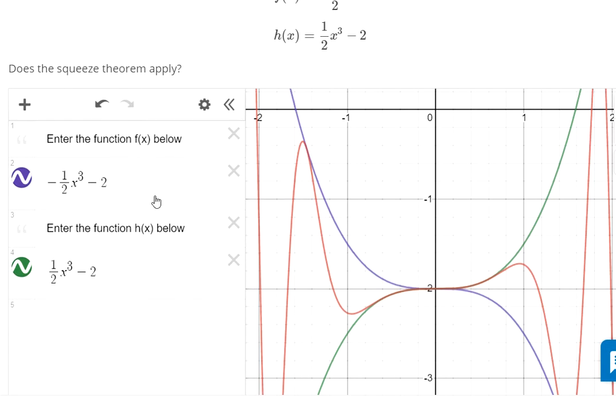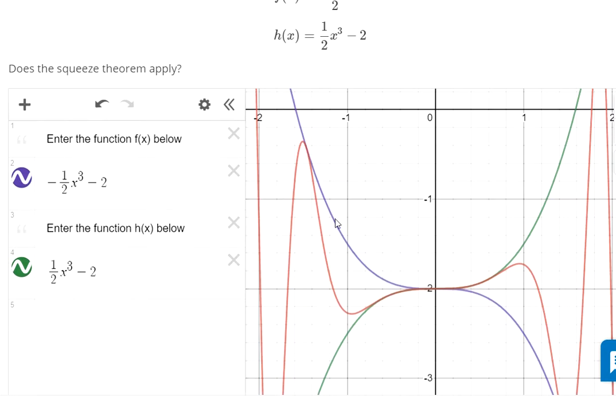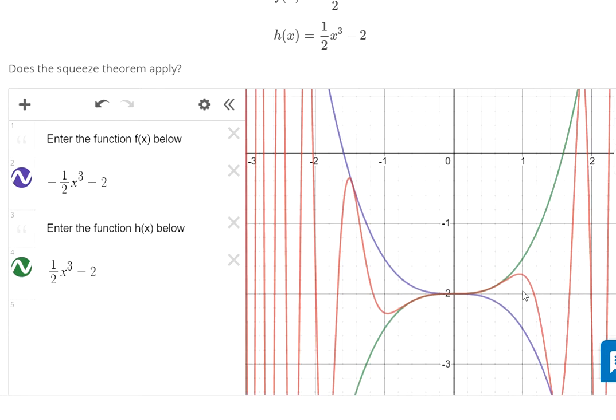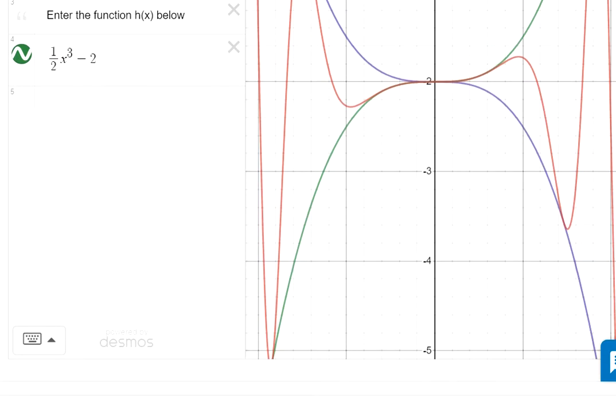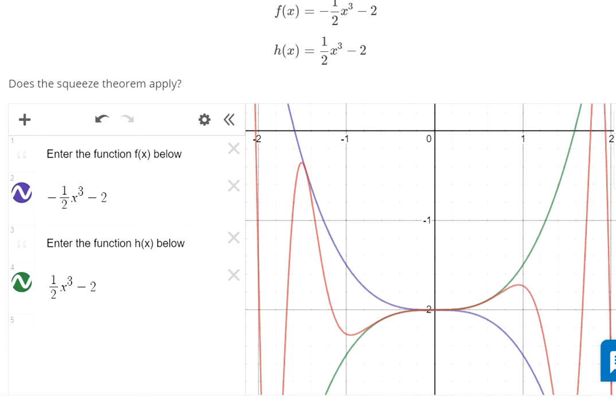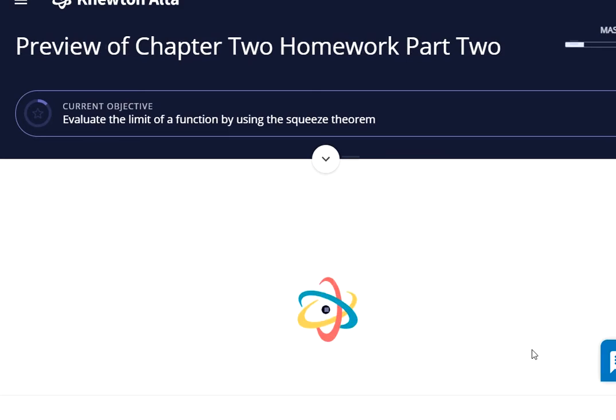Again, for the squeeze theorem, f of x always has to be bigger than the function you're trying to squeeze. This is bigger on the left side but smaller on the right side, so the squeeze theorem does not apply. f of x is not always less than or equal to g of x, which is not always less than or equal to h of x. Same problem with h of x—it starts less and becomes greater. It's always got to be less than, or always got to be greater than, for the squeeze theorem to apply.